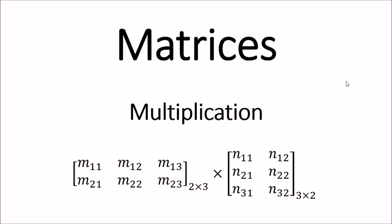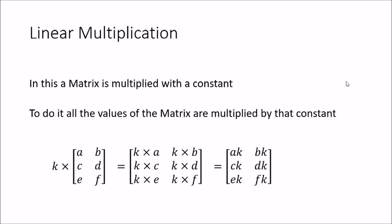First we look at the linear multiplication, where we multiply a matrix with a constant. What we do is multiply each element of the matrix with this constant. The one-one location is multiplied with constant k, the one-two location is multiplied with the constant, and likewise every element one by one. You will get the answer: a·k, b·k, and so on.